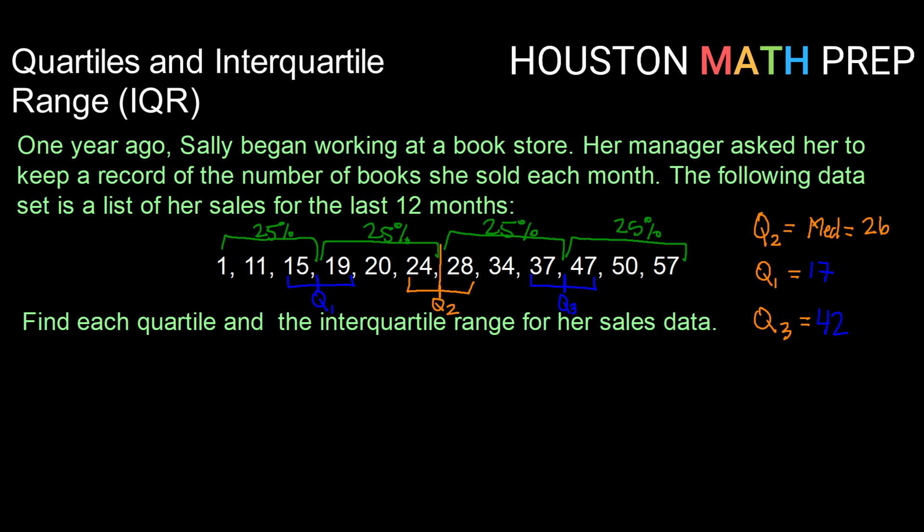All right, so we have found each quartile. Now for this value of interquartile range. So interquartile range, or IQR for short, is calculated by taking the difference between the third quartile and the first quartile, or q3 minus q1. For Sally's sales data, that will be 42 minus 17, or 25.